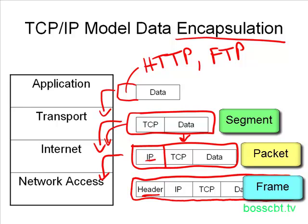This is the encapsulation process of the TCP/IP model. The data then goes to the physical layer and is sent over the network to the destination. The same process is happening — encapsulation at each layer — but using different terminology. Make sure to memorize which of these terms correspond to which layer.